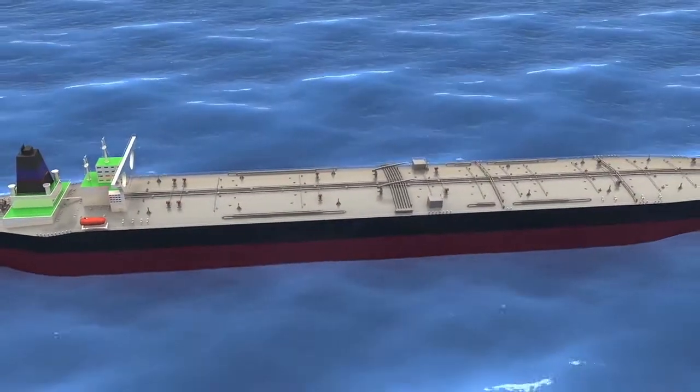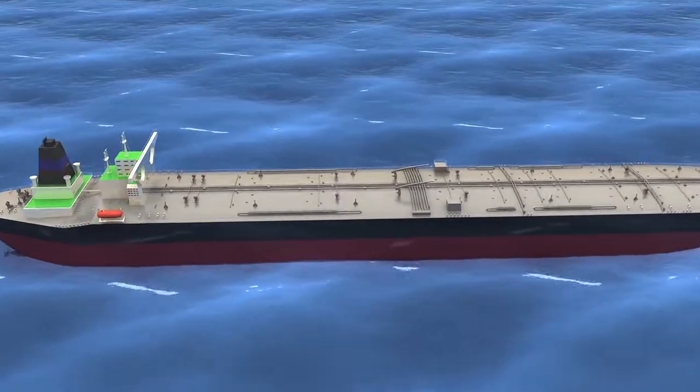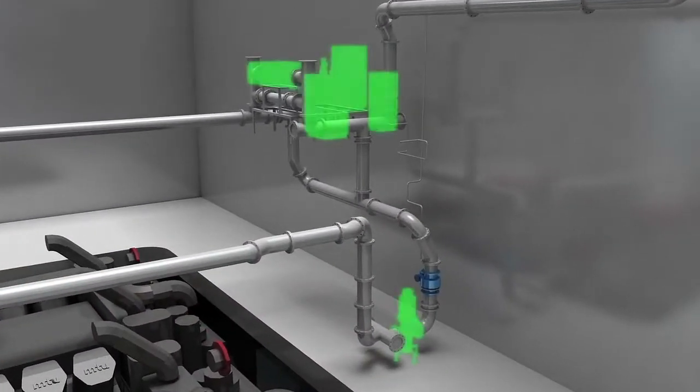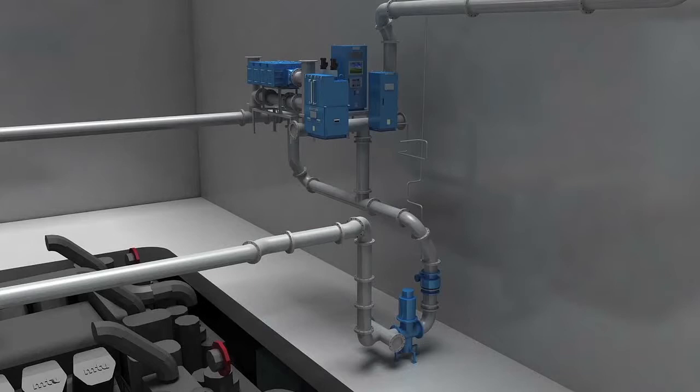Some tankers which have no pump room but submerged ballast pump can install the non-explosive ECU in engine room with an additional ballast pump. This design is possible because ECS does not require retreatment at discharging. Even though the additional pump will need to be added in the engine room, this is a much more economical solution.